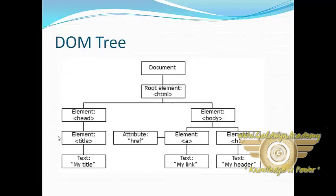This is the DOM tree in which the root node is the document. The root element has two sub-elements which are its children — one is the head and the second is the body. Body also contains two children: the anchor tag and the h1 tag, which also have sub-elements as children. So this is about the DOM tree structure.